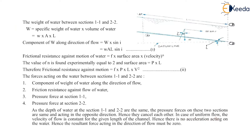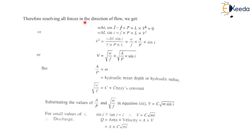In case of uniform flow, the velocity of flow is constant for the given length of the channel, hence there is no acceleration acting on the water. Therefore the resultant force acting in the direction of flow must be zero. Resolving all forces in the direction of flow: w·A·L·sin(i) minus F·P·L·V² equals zero, therefore w·A·L·sin(i) equals F·P·L·V².